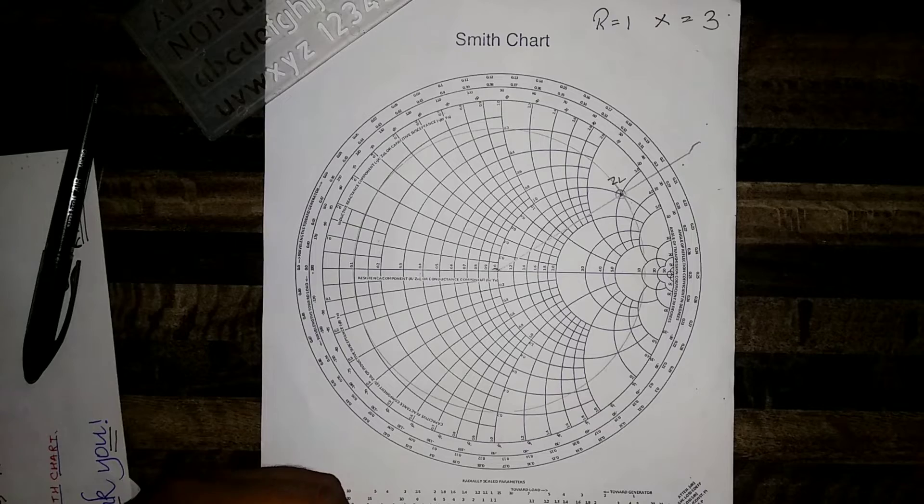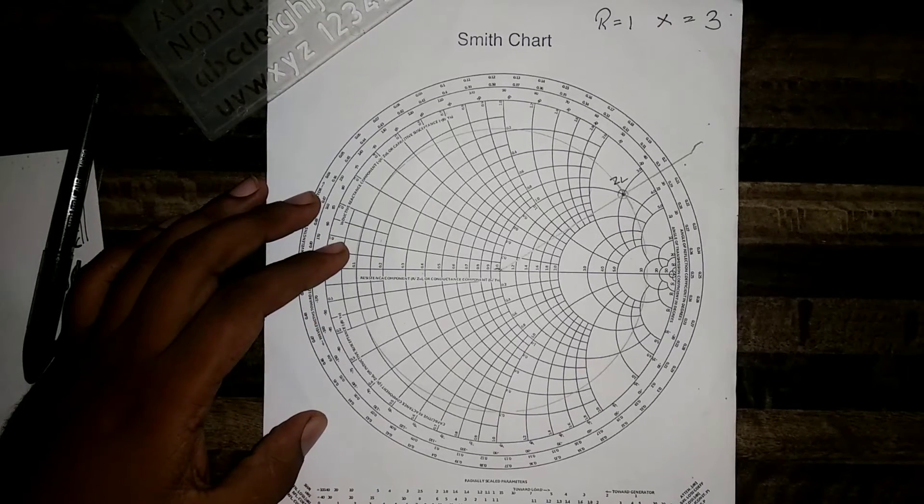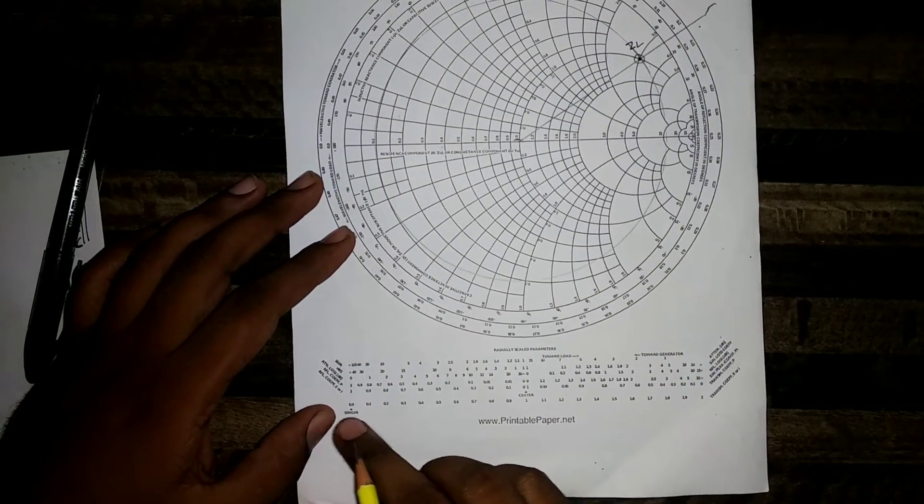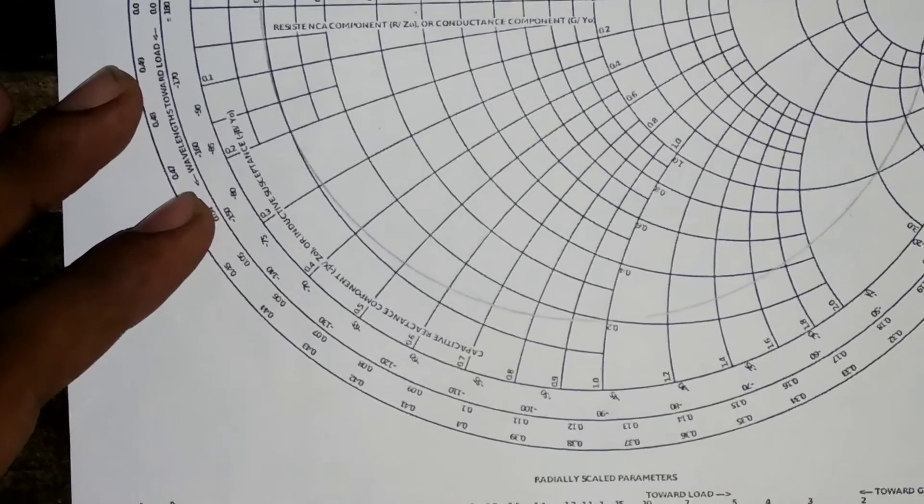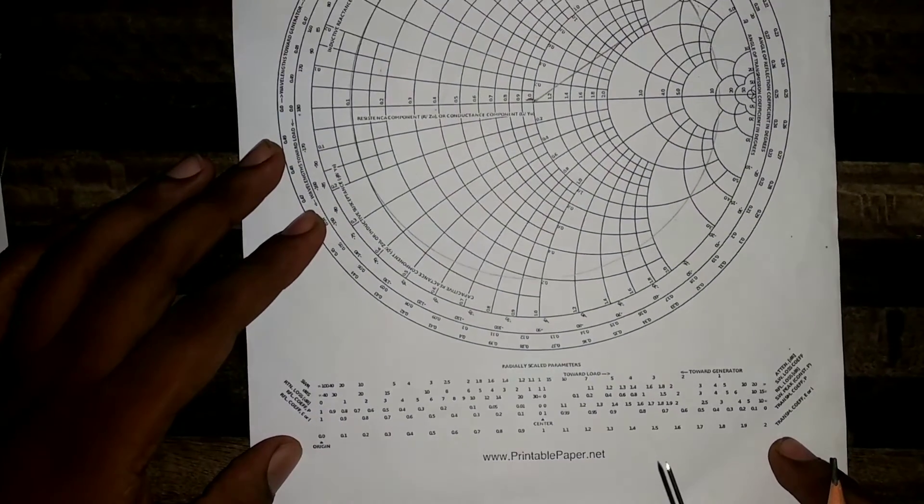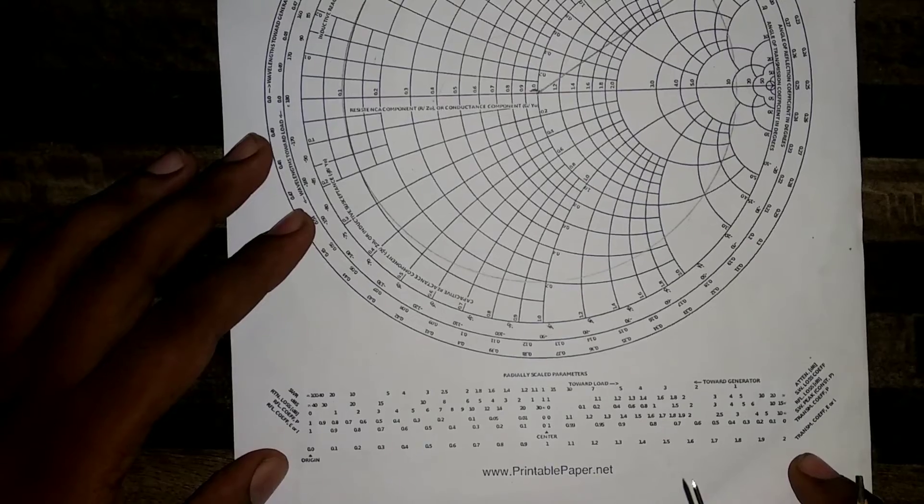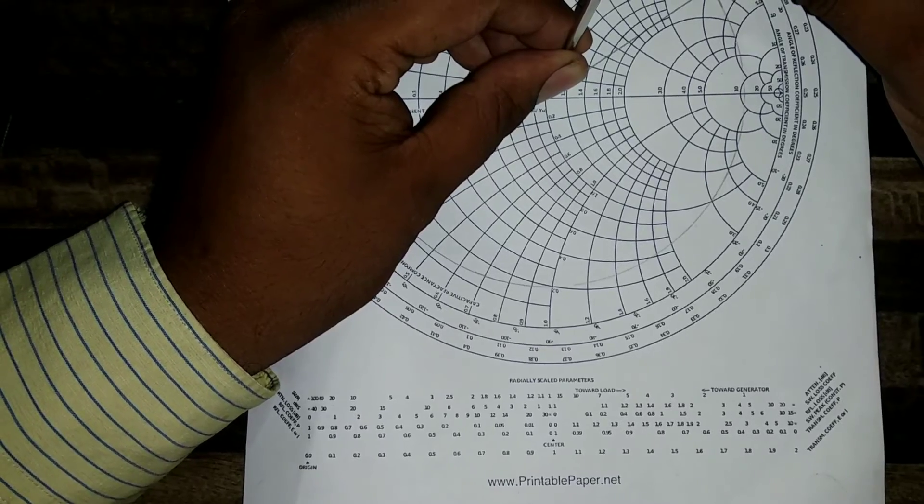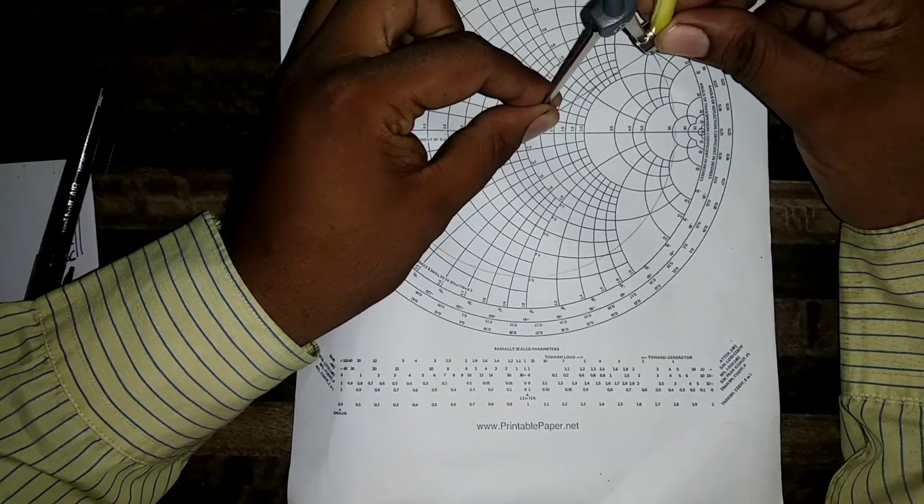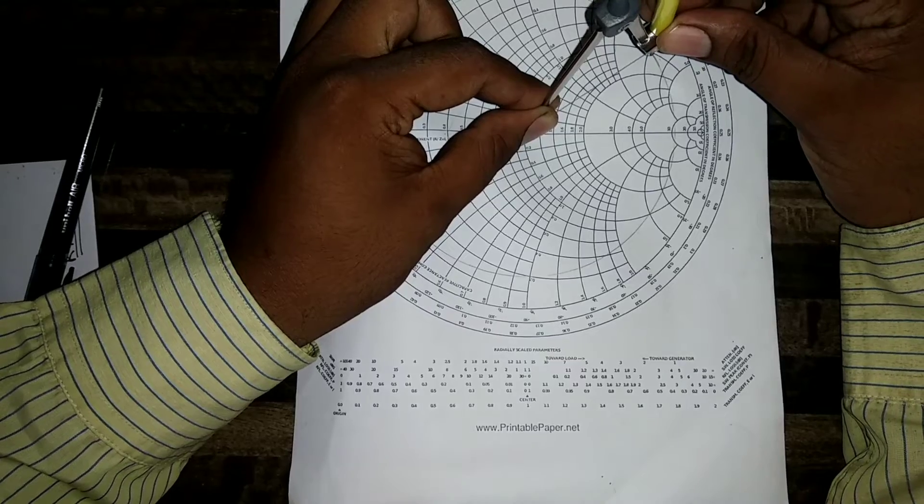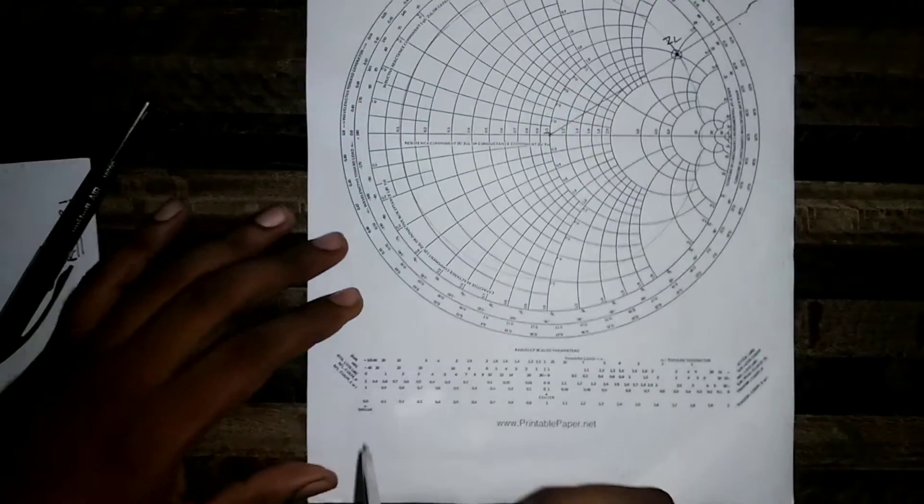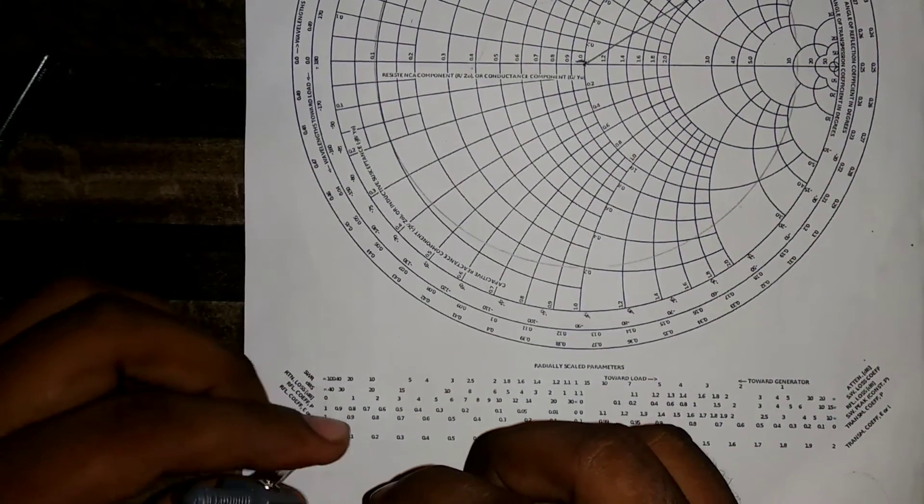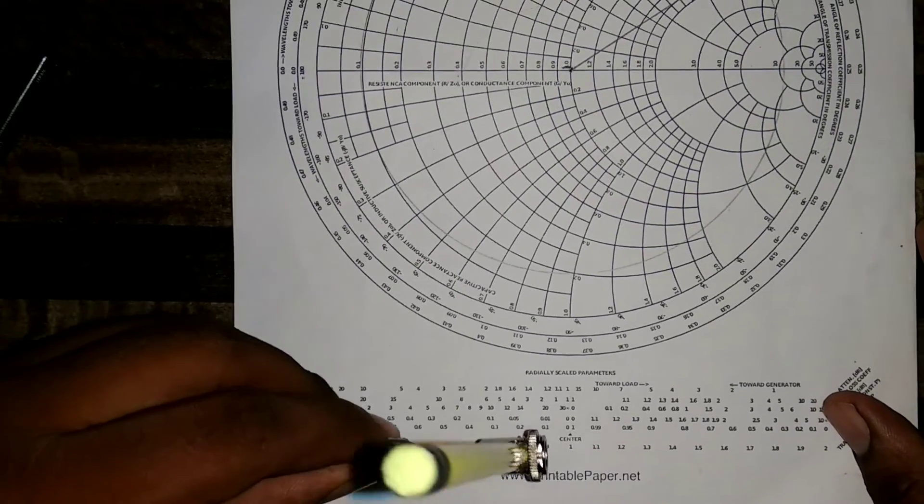Now to get the reflection coefficient, I can find out the magnitude of reflection coefficient from a scale given on this Smith chart only. You can find this last scale given on the Smith chart below the Smith chart. This last scale is for getting the magnitude of reflection coefficient. Keep this rounder at the center and take the distance of the radius of the circle. Take this distance radius of the circle. Keep it at the scale given at the end last scale on the Smith chart and mark on it.